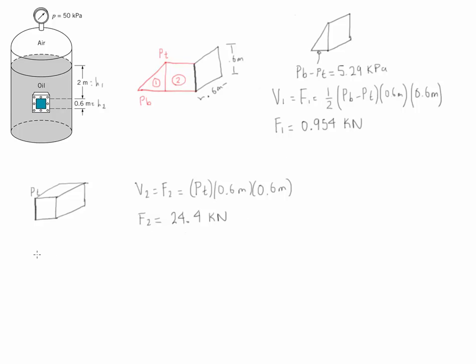Now we have the resultant forces of the two sections. We need to calculate the resultant force throughout the whole plate, which is simply F1 plus F2, and for this case it is equal to 25.4 kilonewtons.